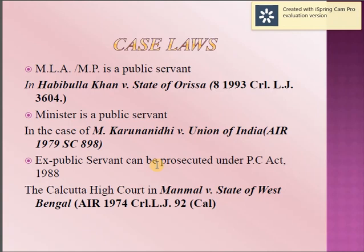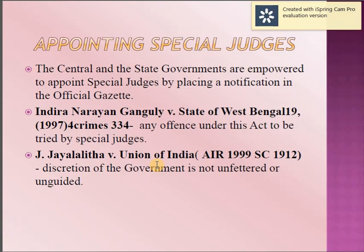The next special feature of this act is the appointment of special judges to trial corruption cases. The central and state governments are empowered to appoint special judges by placing a notification in the official gazette. Two famous cases on special judges are: Indira Narayan Ganguly vs. State of West Bengal, 1997, and J.J. Lalita vs. Union of India, AIR 1999 Supreme Court 1912.